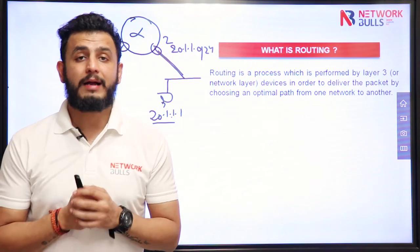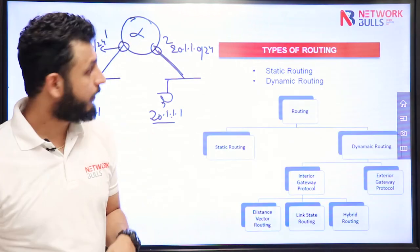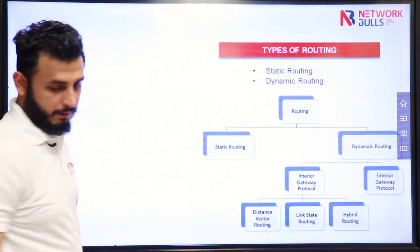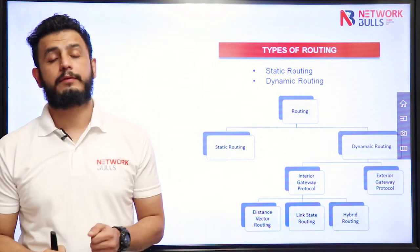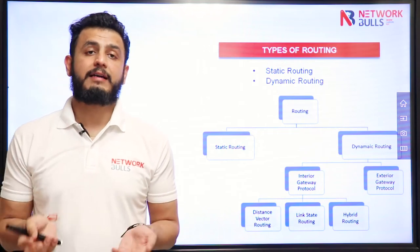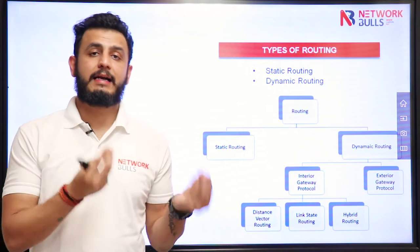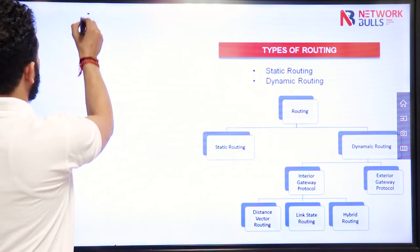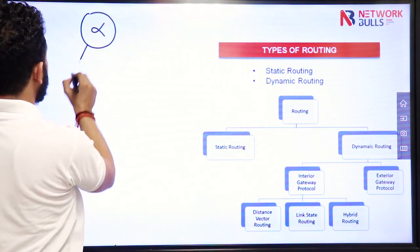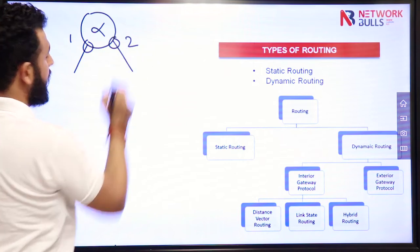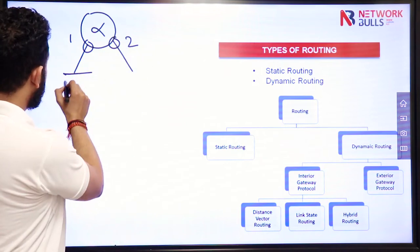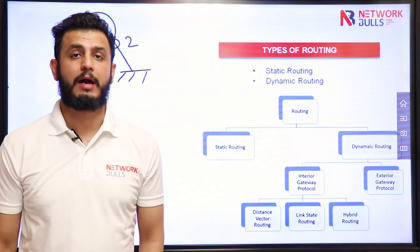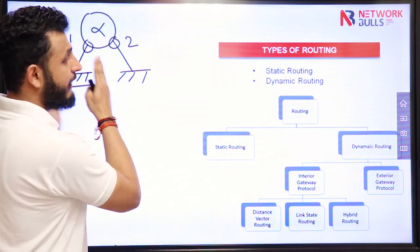Now we will discuss what are the different types of routing. Routing is categorized into two categories: the first one is static routing and the other one is dynamic routing. Before starting on these terms, let me give you an overview of what are directly connected networks and what are non-connected networks. In case number 1, if a router has two interfaces and we want to send data from the network connected to interface 1 to the network connected to interface 2, no routing configuration is required because both networks are directly connected to the router.